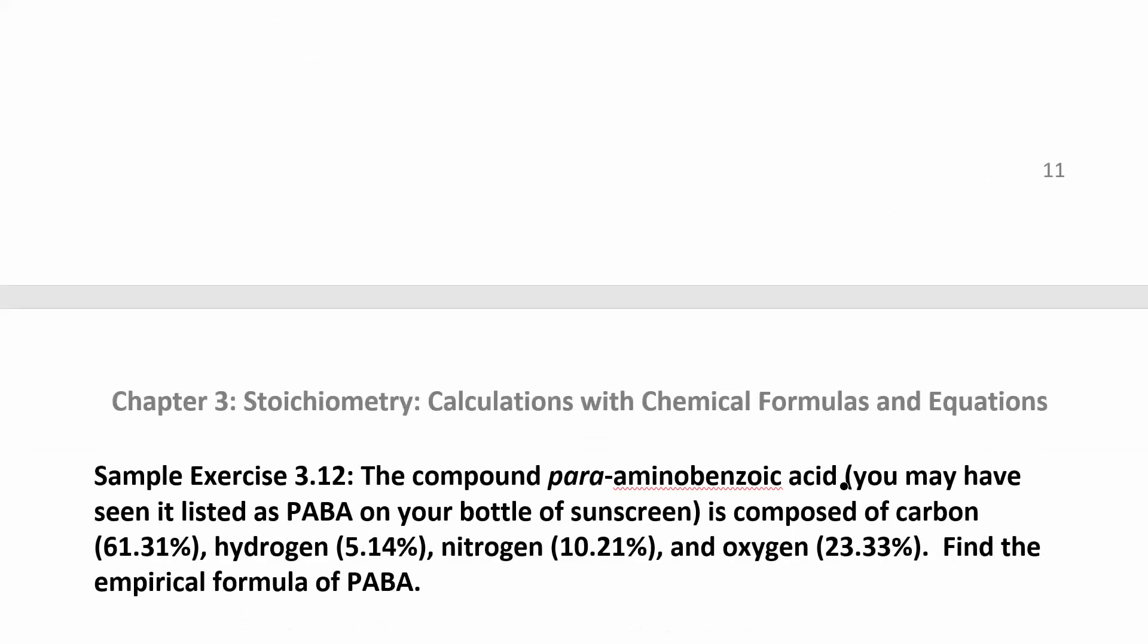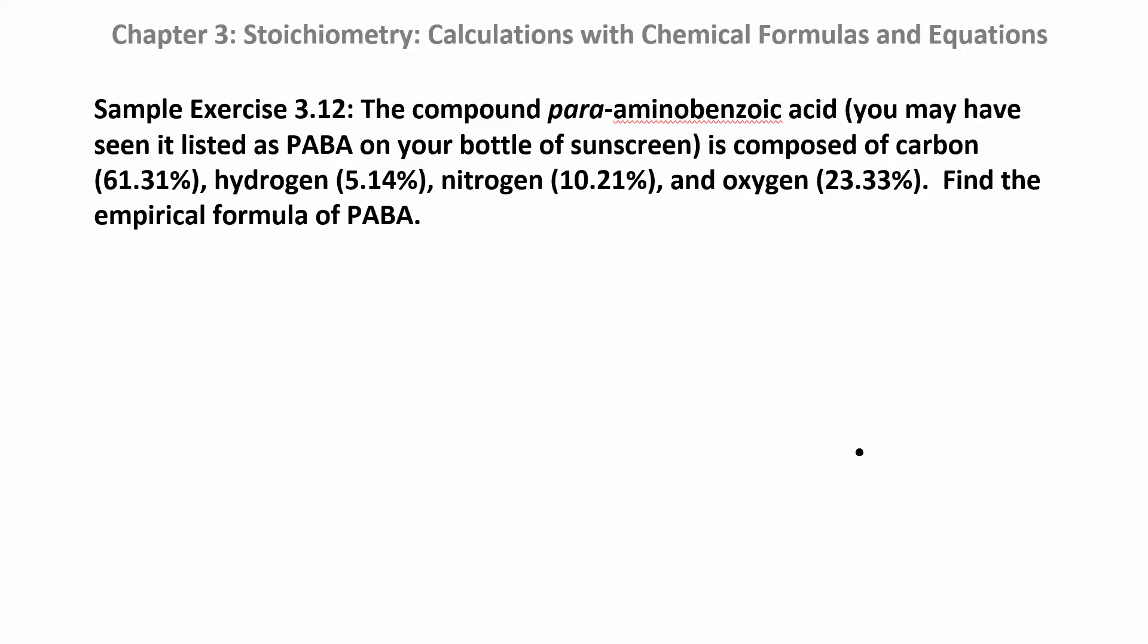This one is something that's in sunscreen, para-aminobenzoic acid or PABA. It gives you the percent composition by element here. So it's composed of 61.3% carbon, 5.14% hydrogen, 10.21% nitrogen, and 23.33% oxygen. We want to find the empirical formula. Again, we're finding the empirical formula, you're going to take all those percents and convert them to grams. If you assume you have 100 gram sample and 61.31% of it is carbon, then you have 61.31 grams of carbon. You have 5.14 grams of hydrogen, 10.21 grams of nitrogen and 23.33 grams of oxygen.